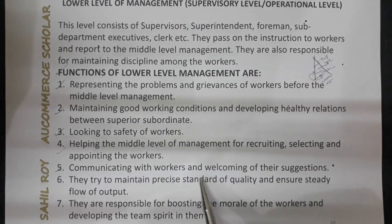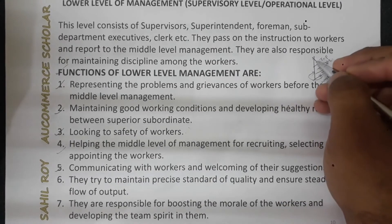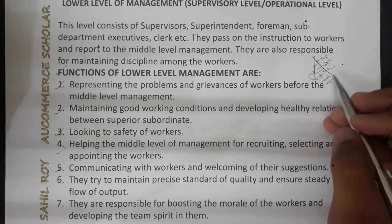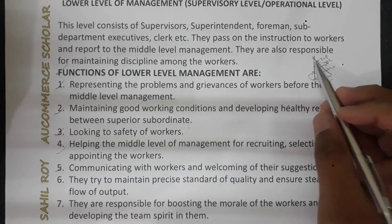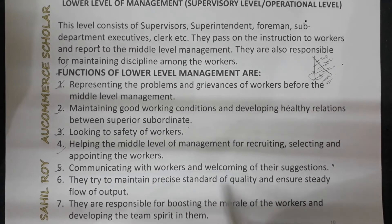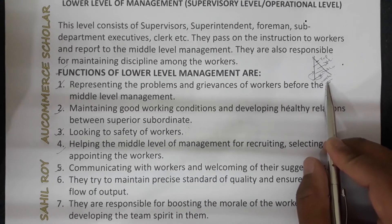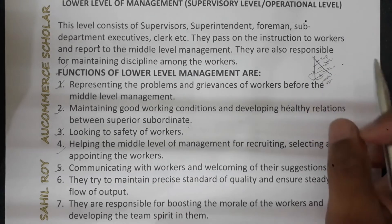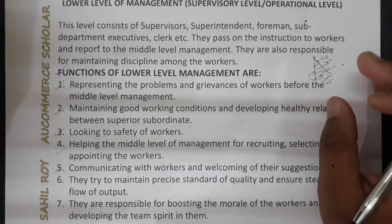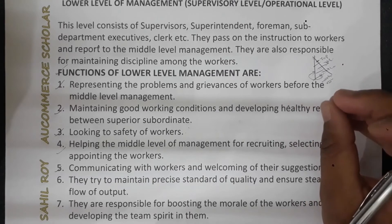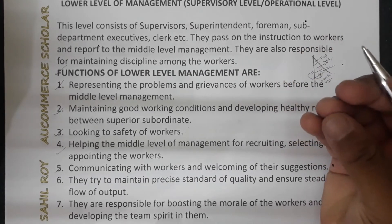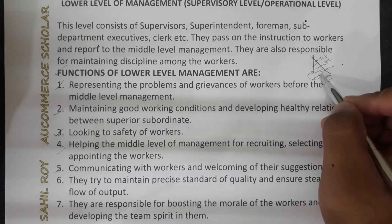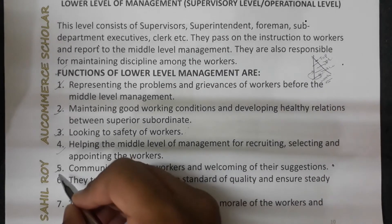Point number five is communicating with workers and welcoming their suggestions. Top level managers can never fully understand the problems of workers — that understanding belongs to lower level managers, who then relay it upward. The supervisory level managers encourage workers to take initiative, welcome their suggestions, and reward them for good suggestions.